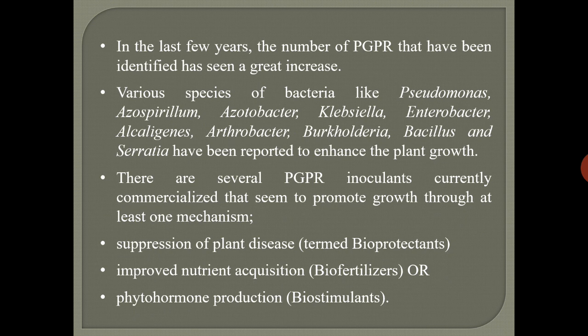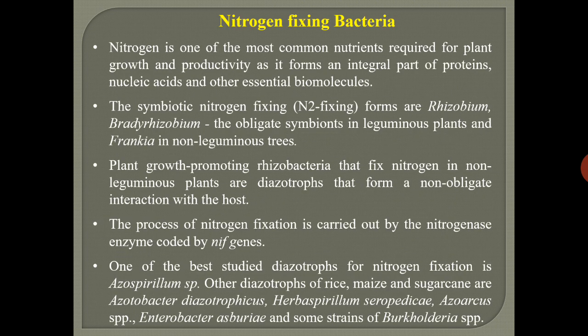Suppression of plant diseases — these are called bio-protectants. Improved nutrient acquisition — these are called bio-fertilizers. Phytohormone production — these are called bio-stimulants. These are the three mechanisms by which PGPR can improve plant growth. The major activity among PGPR is their ability to fix nitrogen, which is one of the most common nutrients required for plant growth and productivity, as it forms an integral part of proteins, nucleic acids, and many other essential biomolecules.